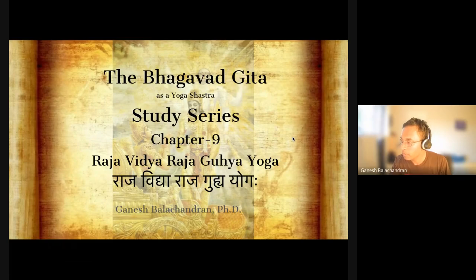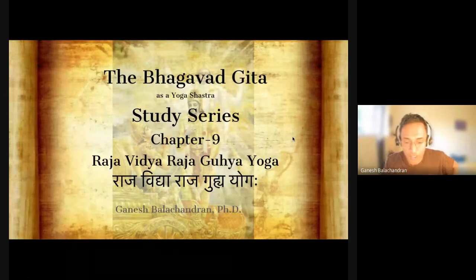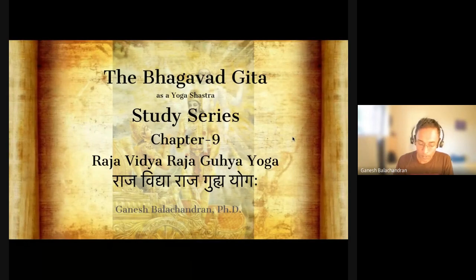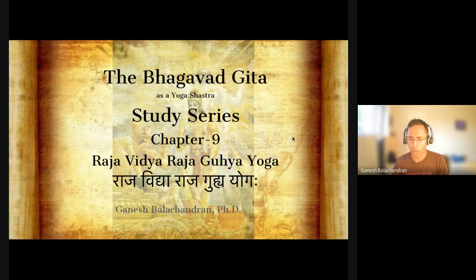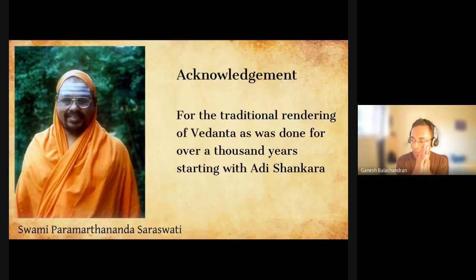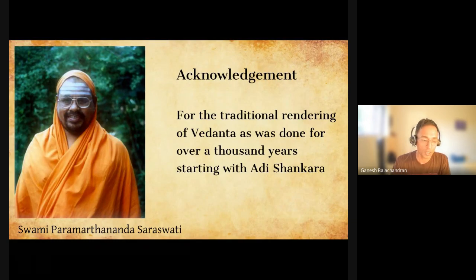Welcome everybody to this 45th class in this Bhagavad Gita study series. Hopefully we will be able to complete chapter 9 today. With the completion of chapter 9, we are halfway through the Bhagavad Gita — it has 18 chapters. We are studying the chapter Raja Vidya, Raja Guhya Yoga, a very important chapter talking about the essence of the nature of Brahman and also about Bhakti. We acknowledge Swami Paramarthananda Saraswati for the traditional rendering of Vedanta as done for over a thousand years starting with Adi Shankaracharya.